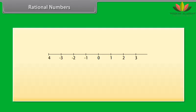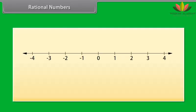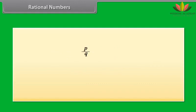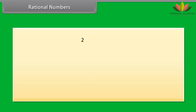Now if we look between the numbers 0 and 1, or 1 and 2, we will see numbers like 1/4, 3/4, and so on. The collection of these numbers is called rational numbers, denoted by the symbol Q. Rational numbers are written in the form P/Q, where P and Q are integers and Q is not equal to 0. Is 2 a rational number? Yes, 2 is a rational number because it can be written in the form P/Q where Q is 1, which is not equal to 0.